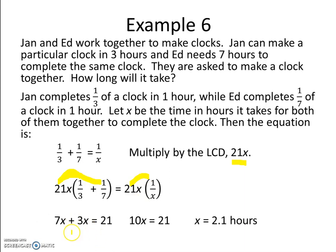Adding the 7x and the 3x, we find that 10x equals 21. Dividing both sides by 10, we find that x equals 2.1 hours.